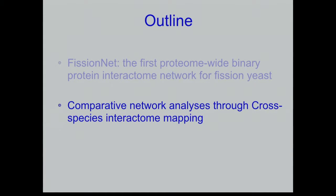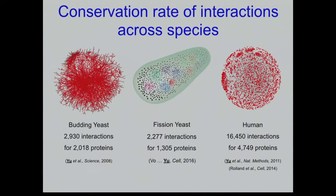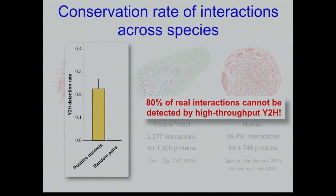Now we have three networks — fission yeast, budding yeast, and human. A key question is: how many interactions are conserved between species? Many publications have addressed this. The naive approach is to take the 2,300 fission yeast interactions and count how many appear in human or budding yeast — but that's not right. We know 80% of real interactions are not in any network; these networks are about 80% incomplete. So you can't do that direct comparison.